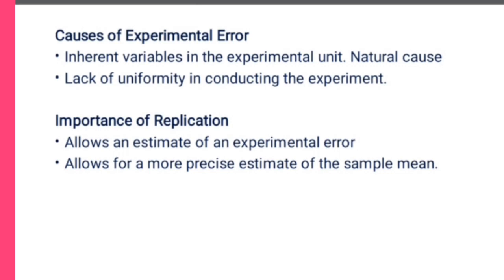The second cause of experimental error is lack of uniformity in conducting the experiment — uniformity is very important. Replication, which simply means repetition, is also important. Its two benefits are: first, it allows an estimate of experimental error; and second, it allows for a more precise estimate of the sample mean.